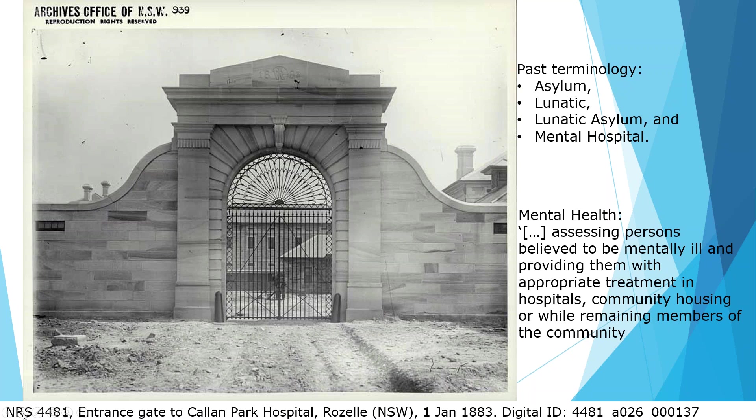The activity of mental health is defined on our website as: assessing persons believed to be mentally ill and providing them with appropriate treatment in hospitals, community housing, or while remaining members of the community. From 1811 to the late 20th century, institutional care in specialised hospitals was the primary means of service delivery. From the 1970s onwards, this progressively gave way to a focus on community-based care and greater use of psychiatric units in general hospitals.